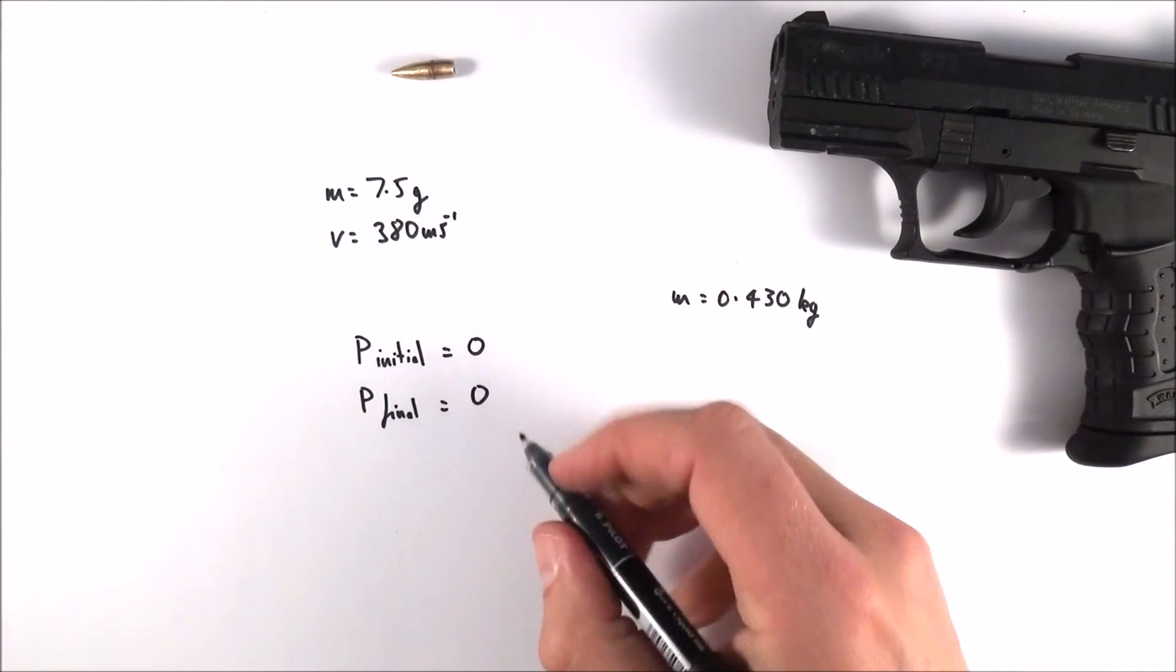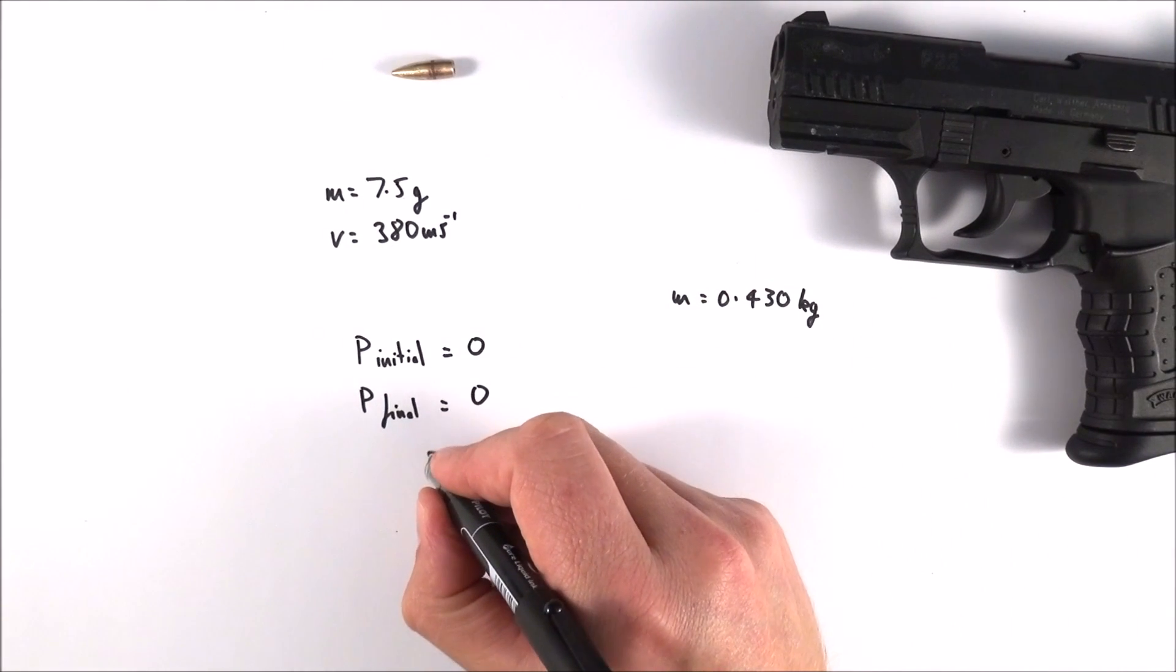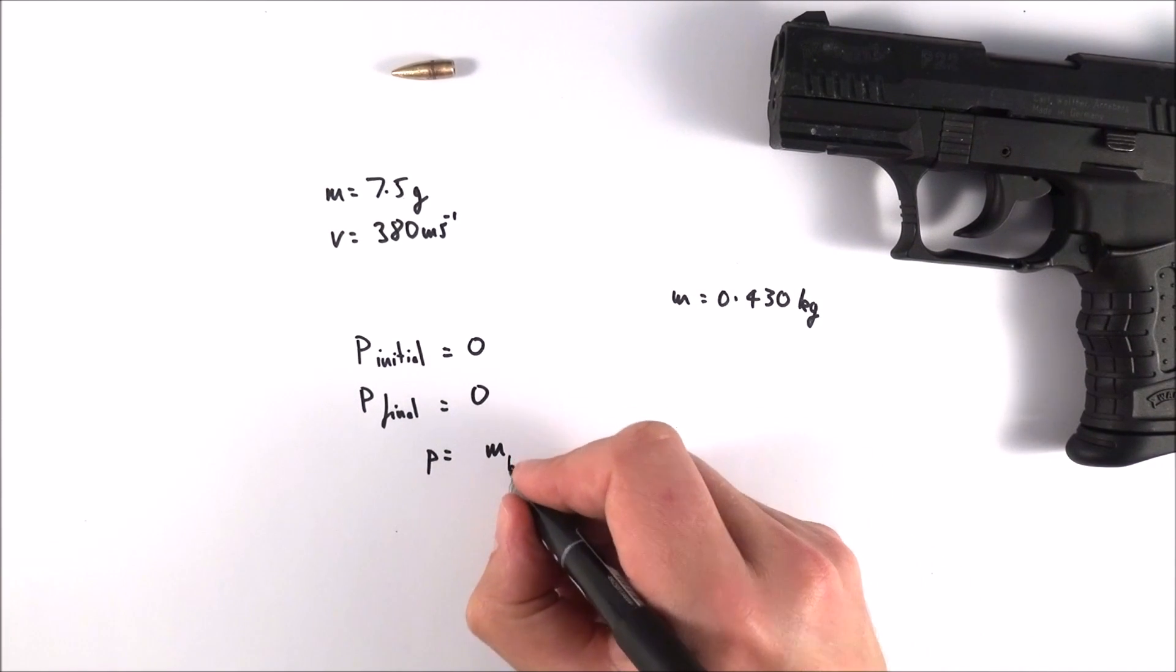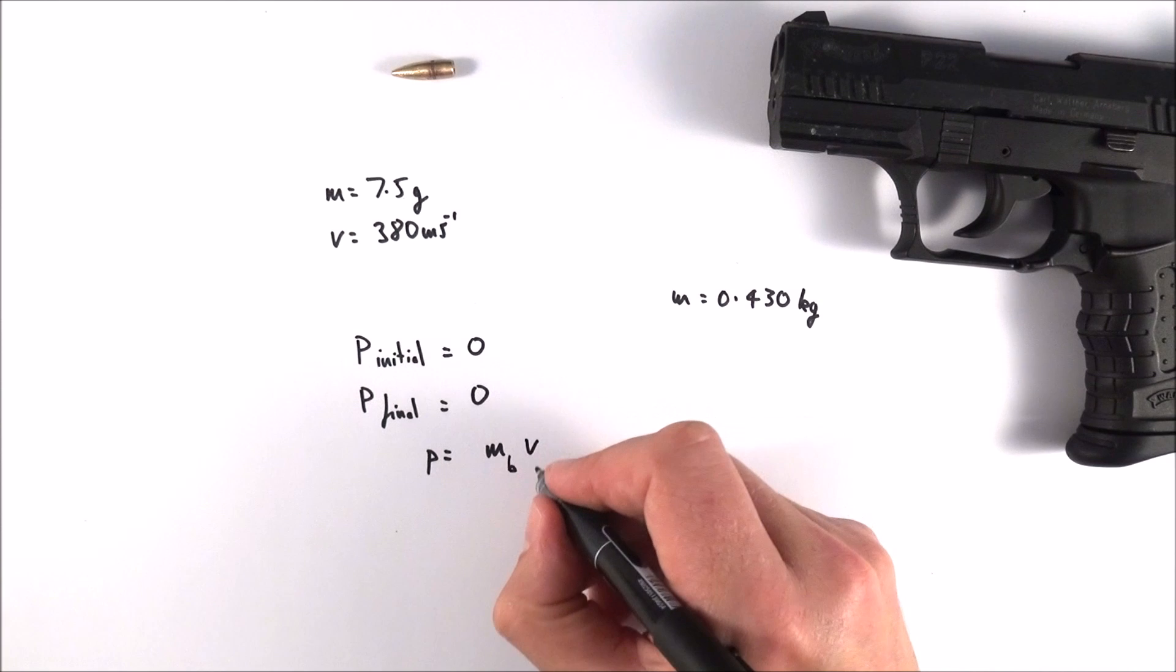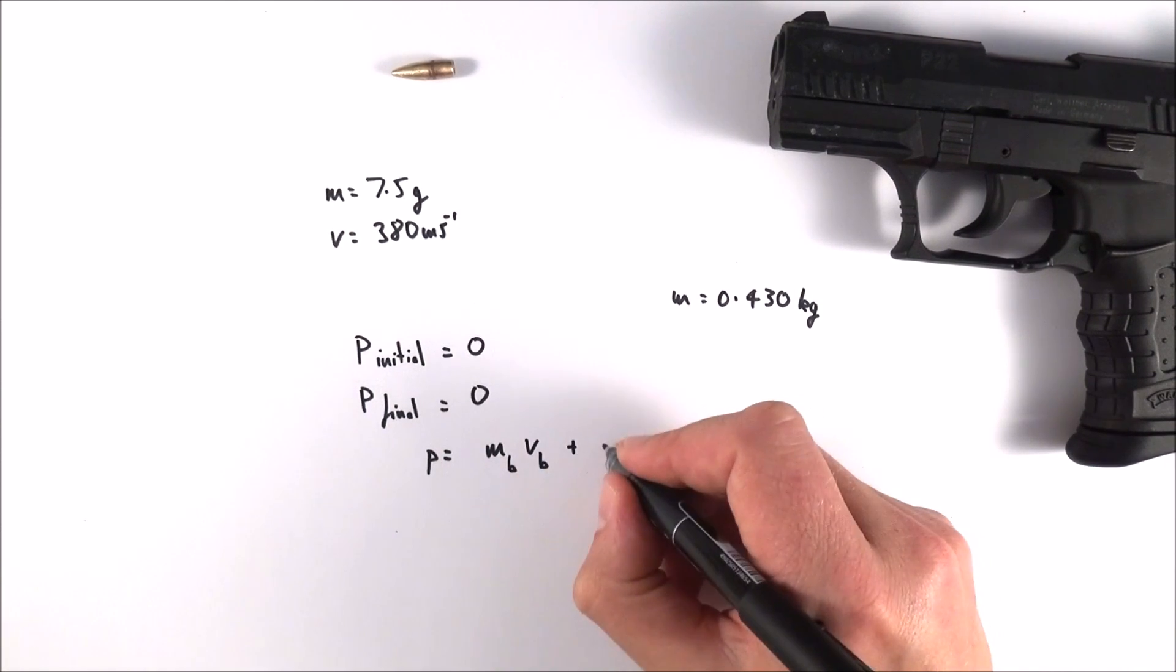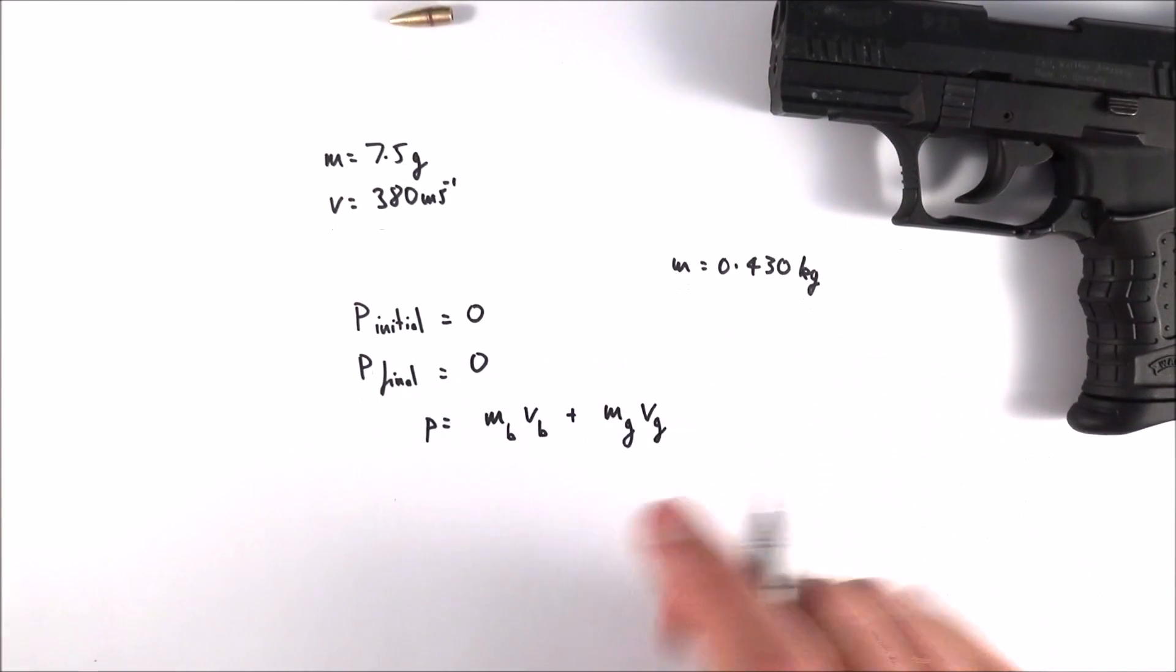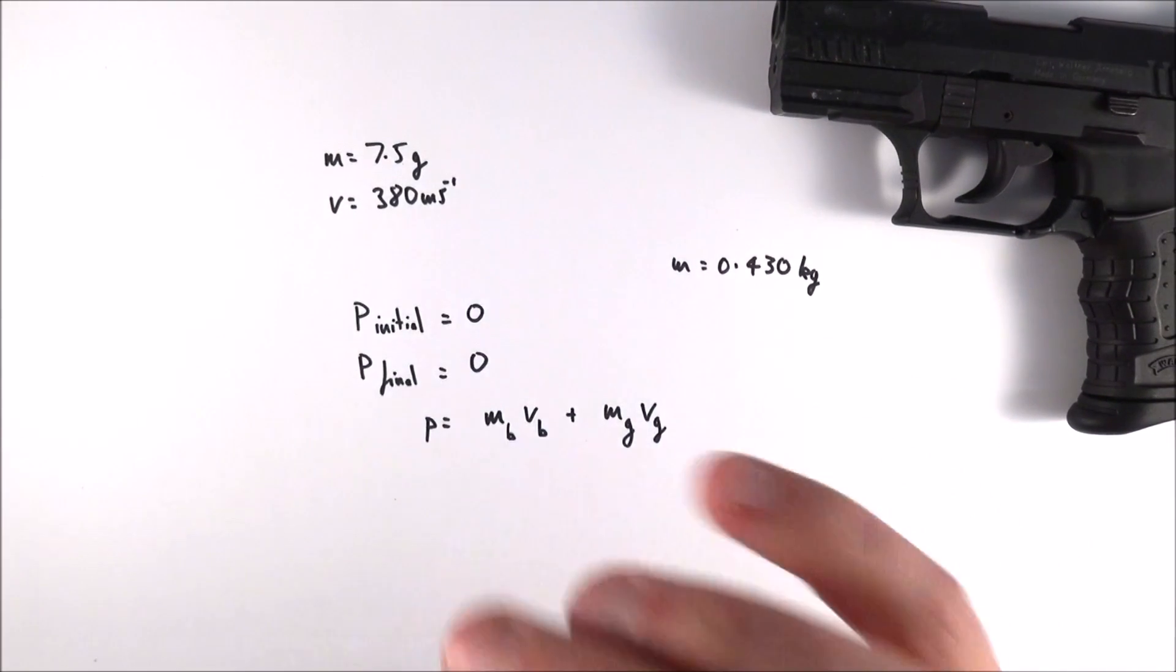So we can say that the final momentum P is equal to the mass of the bullet multiplied by the velocity of the bullet, added to the mass of the gun multiplied by the velocity of the gun. So we can then start to put some numbers in.